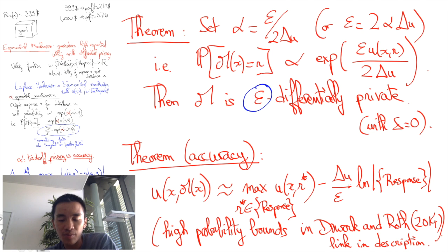Importantly, achieving epsilon differential privacy has a cost on utility which is of the order of delta u times the logarithm of the number of possible responses divided by epsilon.